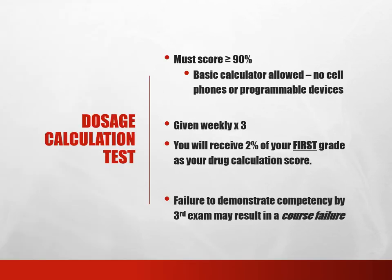On your dosage calculation test, you must score greater than or equal to 90% to be considered passing. A basic calculator is allowed — no cell phones or programmable devices. This test will be given weekly times 3, and you will receive 2% of your grade from your first attempt as your drug calculation score. Failure to demonstrate competency by the third exam may result in a course failure.